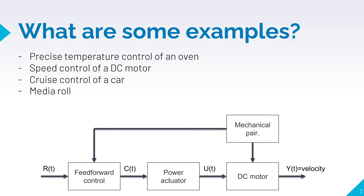We have cruise control of a car. This works when the power of the car engine is increased when a sensor detects an uphill inclination, which is our disturbance. In the event of a downhill slope, the engine power is reduced to compensate for the inclination disturbance. We also have a media roll, which works when a coil that rolls up a material begins with a small diameter and ends with a much larger diameter. By measuring the diameter, which would be our disturbance, the coil can be pre-fed — feed-forward — at just the right speed to wind the material.